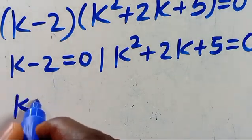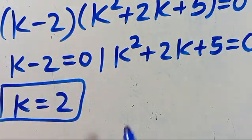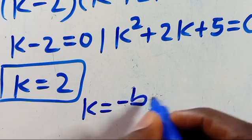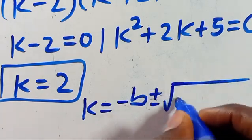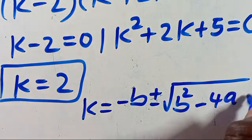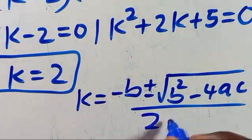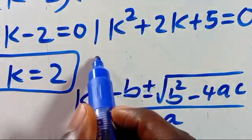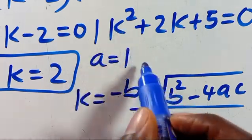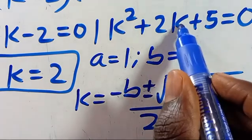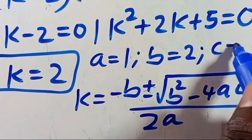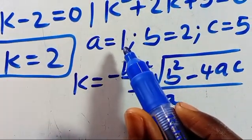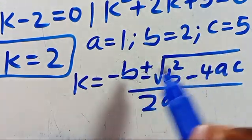So from here, we have k equals 2. And from the quadratic factor, we have to apply the quadratic formula, where k equals minus b, positive or negative root of b squared minus 4ac, divided by 2a. Where parameter a is the coefficient of k squared, meaning a equals 1, then our b is the coefficient of k, which is 2, then our c is 5.